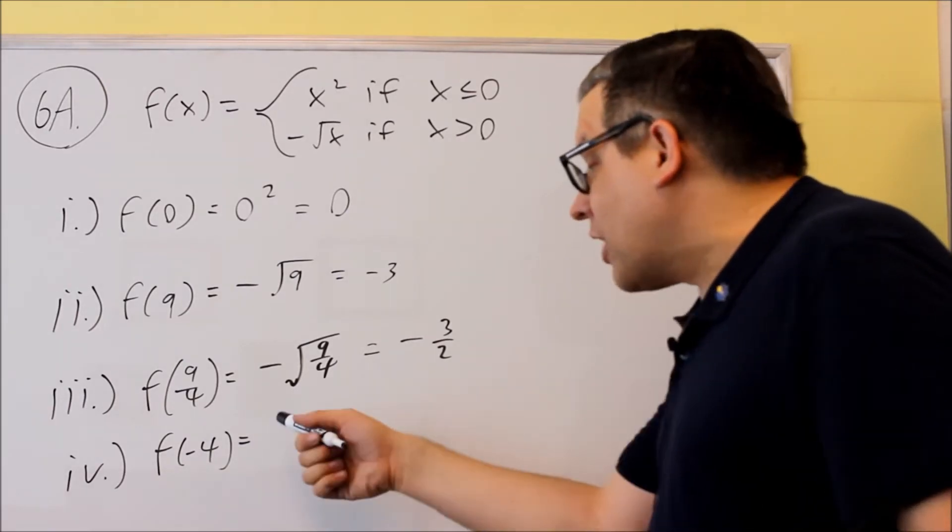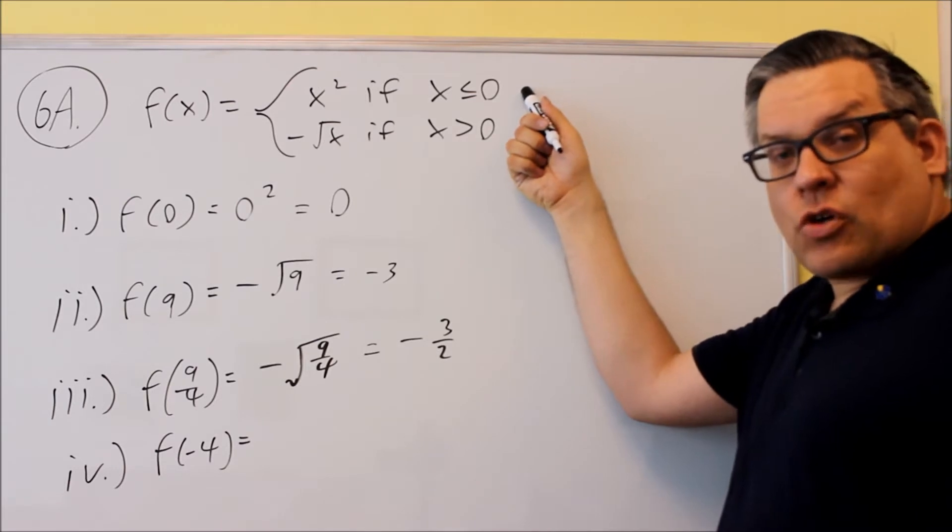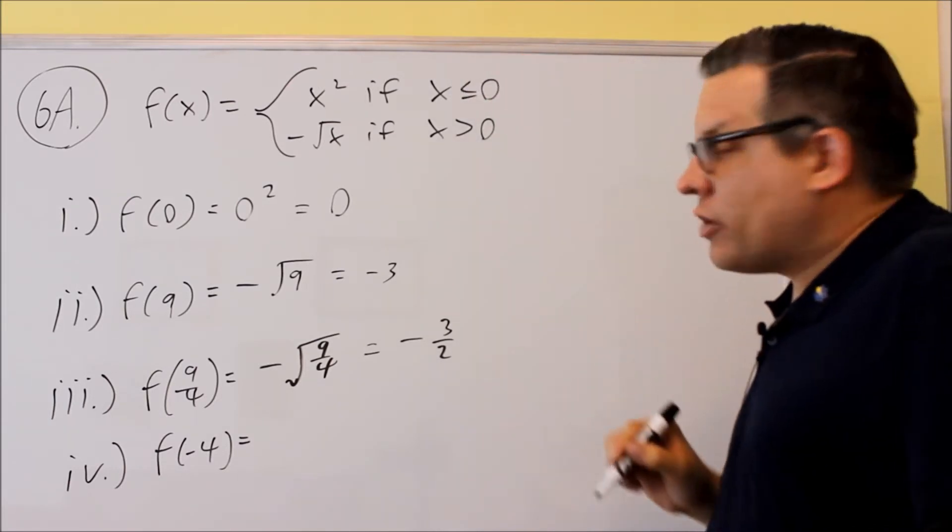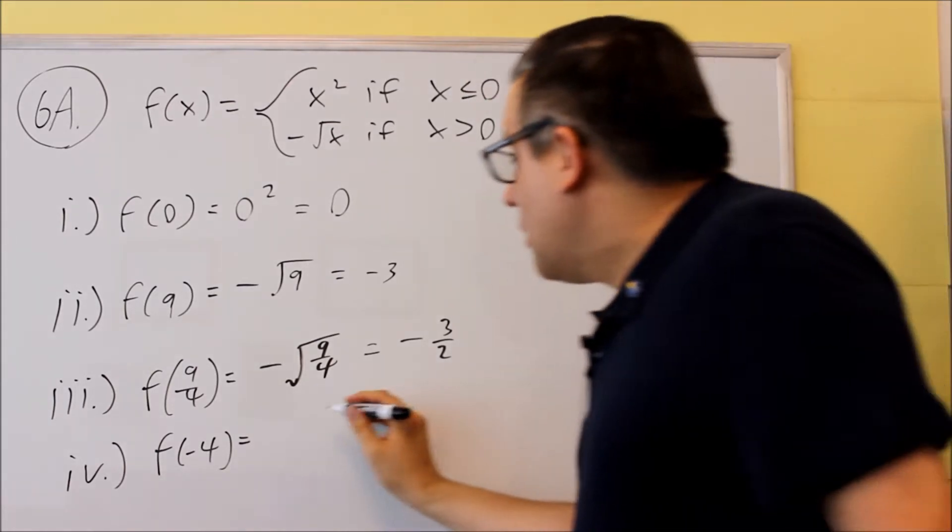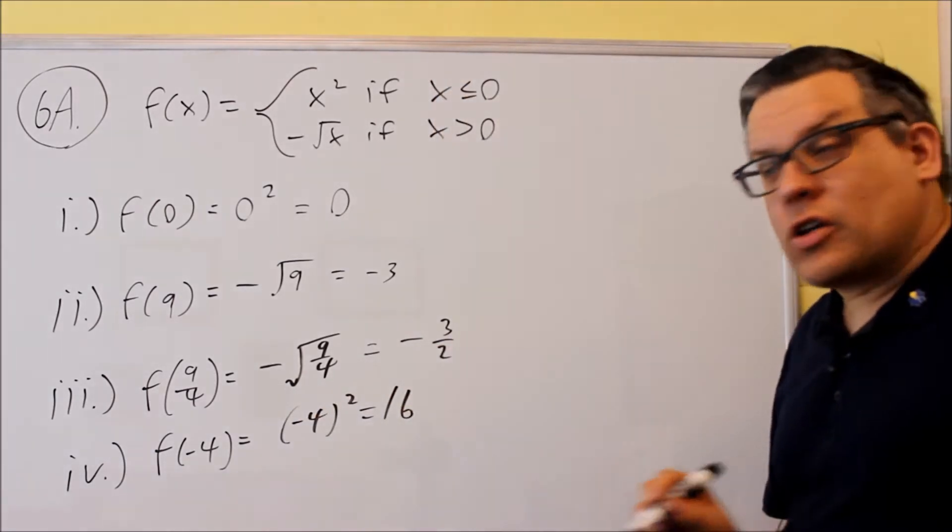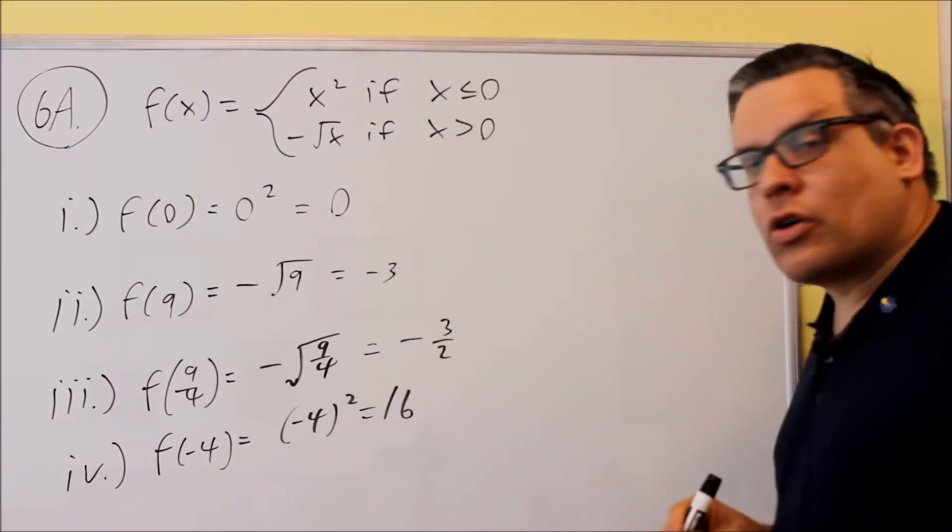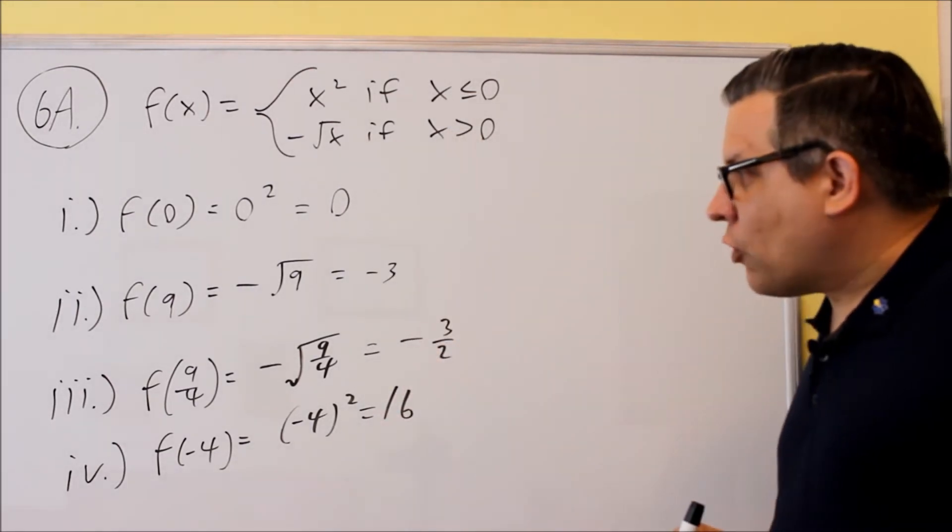The last one, we're going to do f of negative four. If it's negative, that means we have to use the first equation only, because that is only for negative values. So we're going to put negative four in there, and we're going to square it. Remember that a negative squared is going to give you a positive number. We get 16 for the answer. So that's the answer for the first four parts.